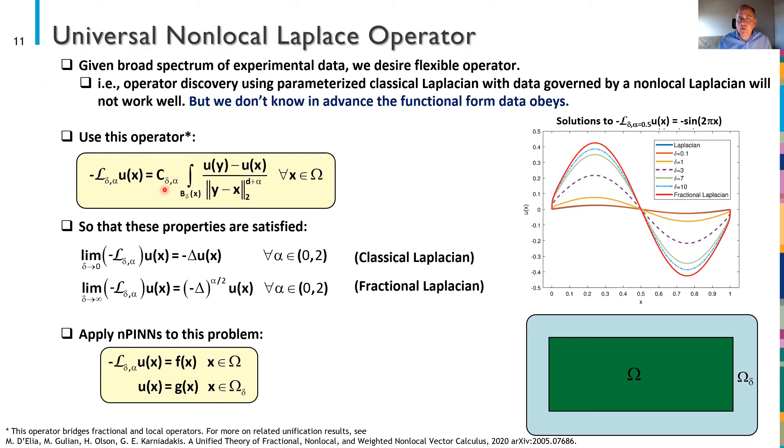In particular I'm going to use the operator here in this yellow box. I'm not going to write down the explicit functional form of the coefficient here just because it's a little tedious but I'll tell you about the properties of the coefficient. This operator is constructed such that as δ goes to zero for any power of α this operator will converge to a classical Laplacian. The coefficient is constructed such that as δ goes to infinity this will converge to a fractional Laplacian. You can see some depiction of the behavior of the operator here to the right. And so what I'm going to do is apply nPINNs to this problem where I assume I have some Dirichlet boundary conditions and that the boundary domain is as large as it needs to be.